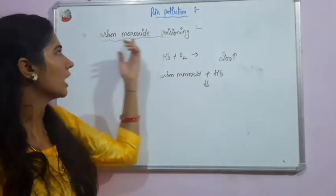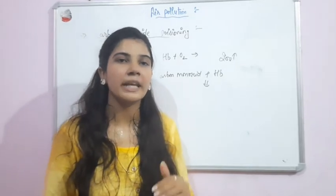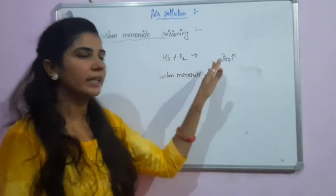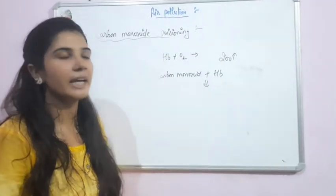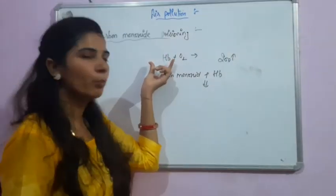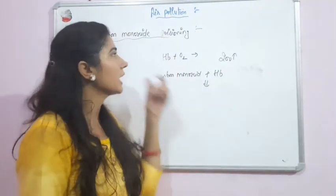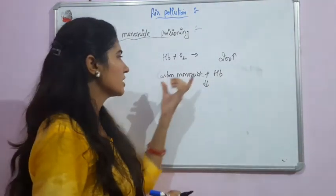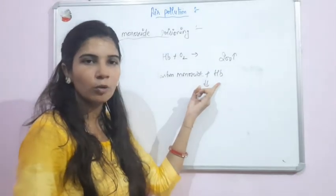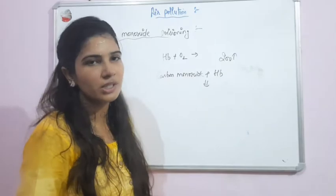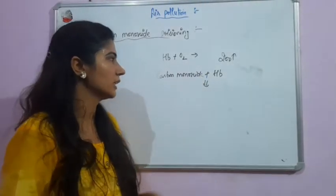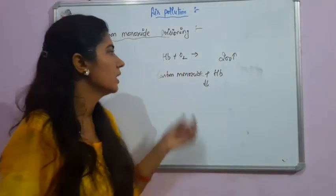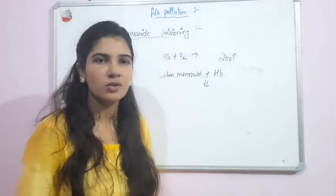So, carbon monoxide poisoning works like this: hemoglobin normally binds oxygen for transportation throughout the body. But when excess carbon monoxide is present in the atmosphere, carbon monoxide — being 200 times more efficient — binds with hemoglobin instead of oxygen, blocking oxygen transport. This deficiency of oxygen in the body may lead to death.